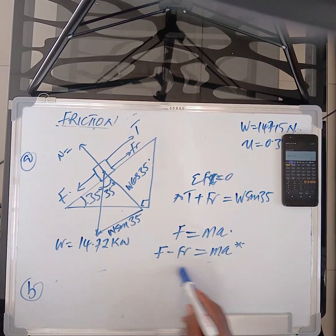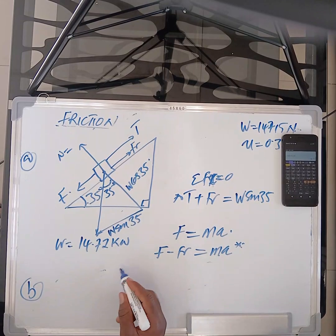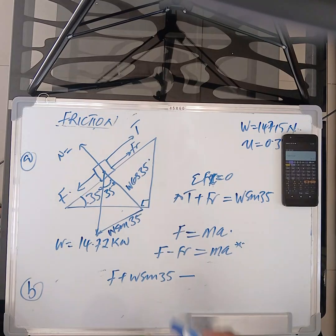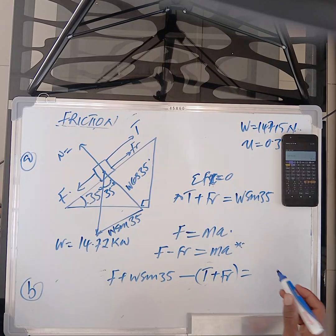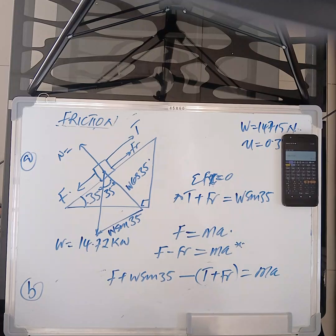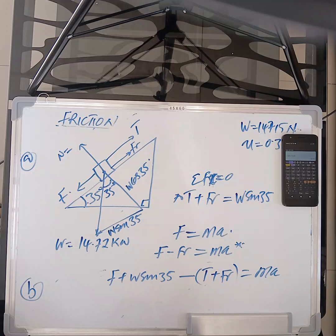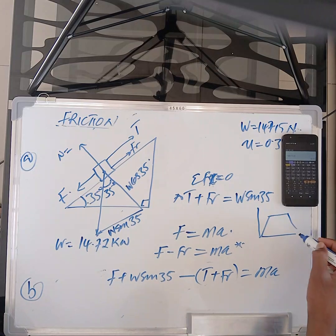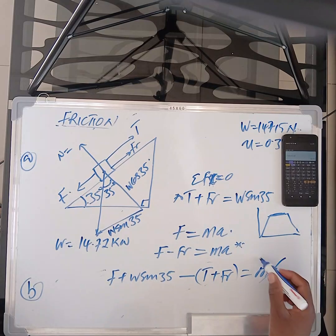So, using this, this force has got an addition of W sin theta. So I'm going to say, force plus W sin 35 minus, these two are acting as a friction, minus T plus FR is equal to mass times acceleration. But remember in the question, they told us that it's being lowered at a constant velocity. Now, when velocity is constant, acceleration is zero.